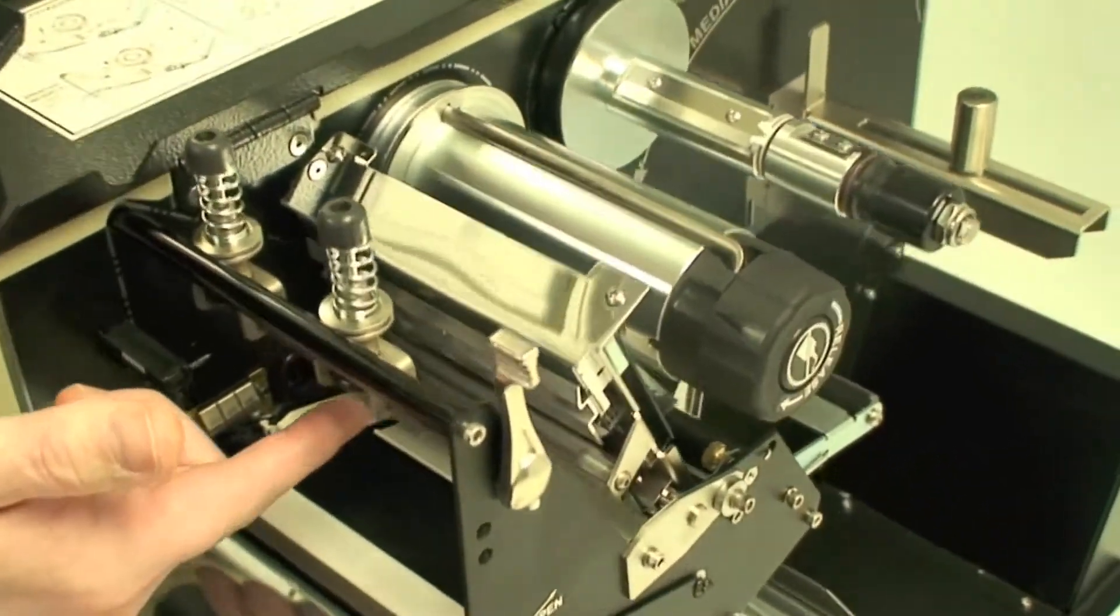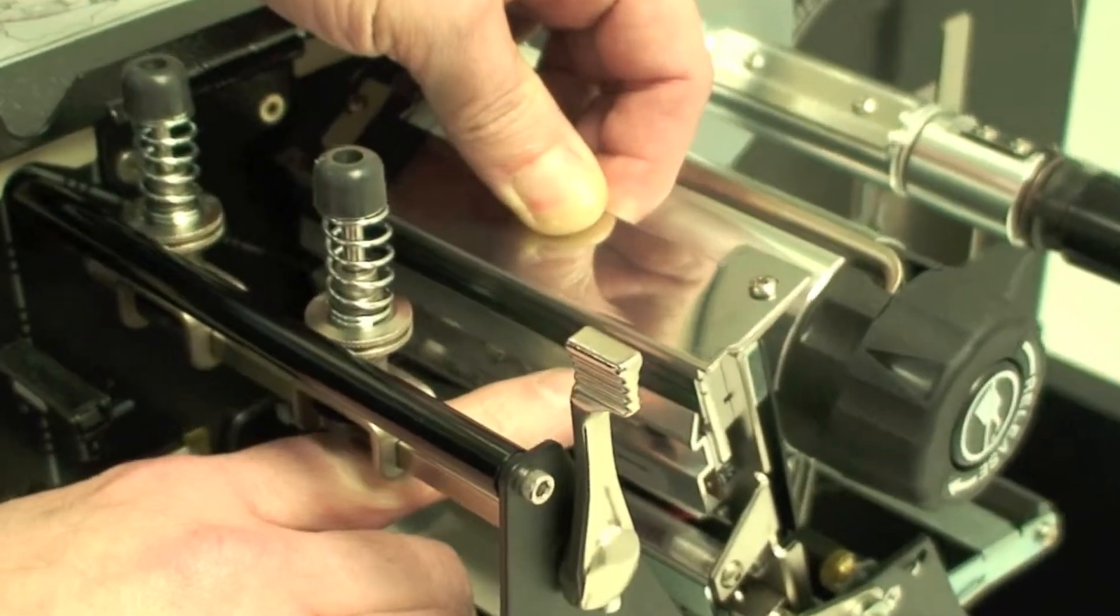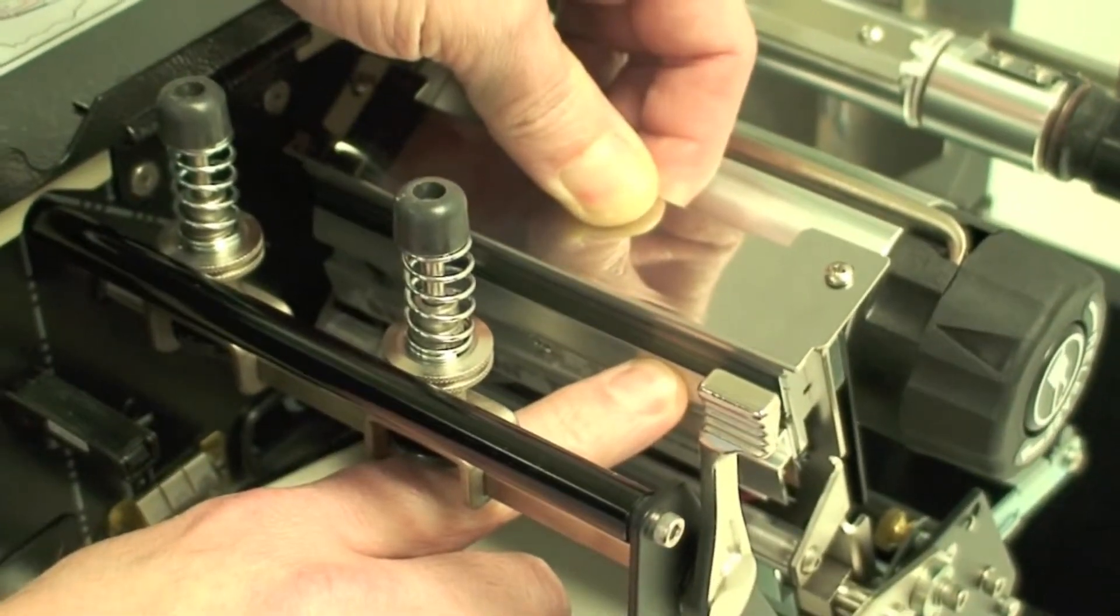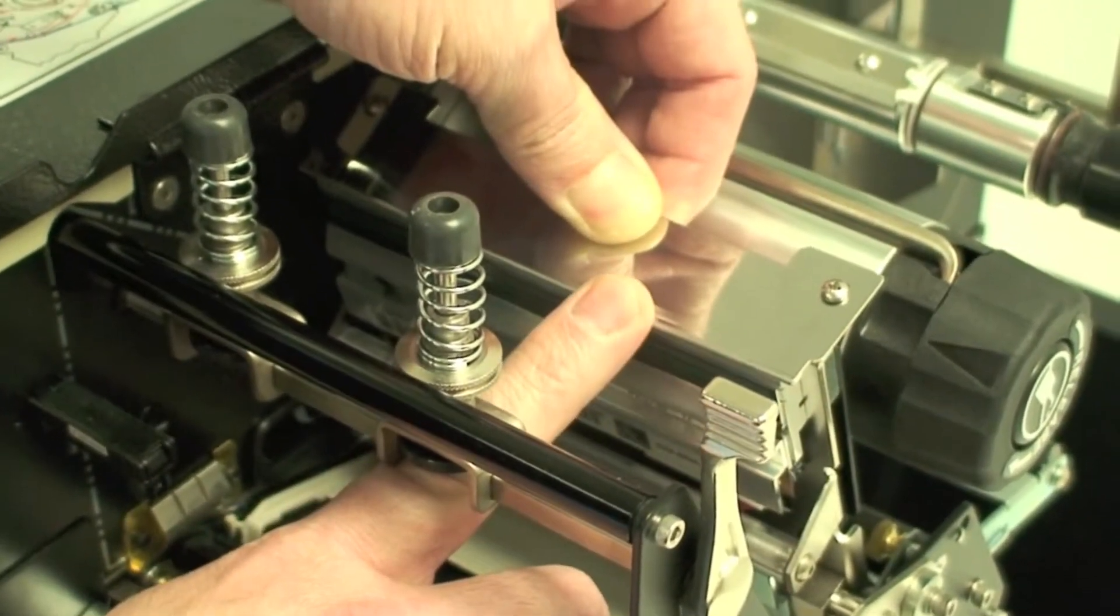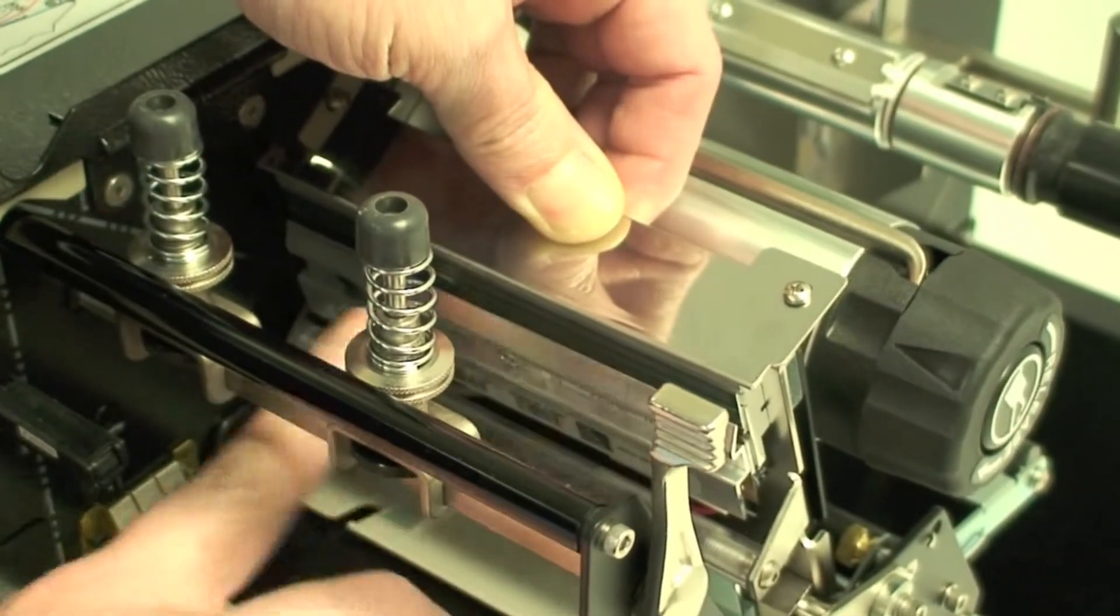The parts that we're wanting to focus on cleaning on the print head are the elements, which is where the casing of the print head ends and the ribbon tension plate begins right here. That's your elements. Those are what you want to clean.